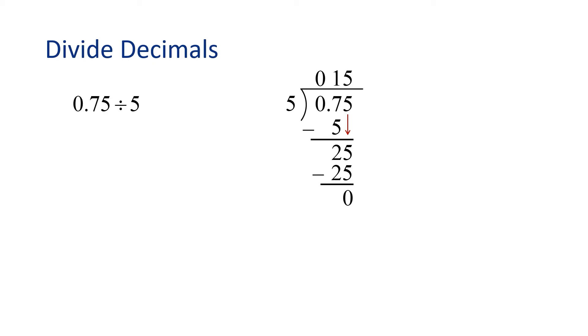Now we need to write the decimal point. What we do is we look at the decimal point from the dividend, 0.75, and we're going to move the decimal point directly up above. And it goes right in between the 0 and the 1.